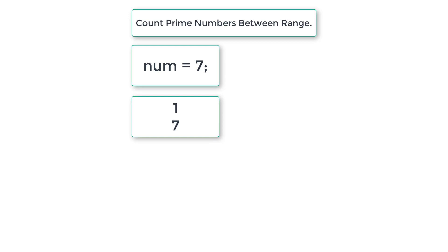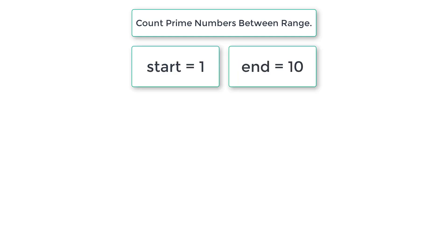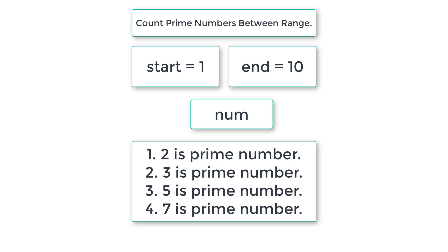In our program, the user needs to enter a range — a start as well as an end value. If the user enters 1 as start and 10 as end, we copy numbers from start to end one by one into the num variable and check if each number is prime. If it's prime we display it on the console. So prime numbers from 1 to 10 are 2, 3, 5, and 7 — there are four prime numbers between 1 and 10.